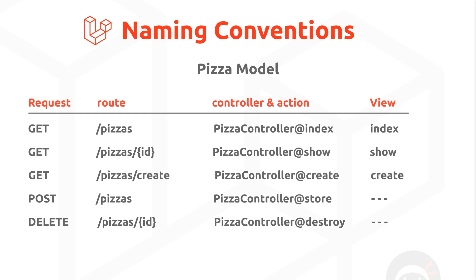Back to this convention chart, I've added a new line at the bottom. The request type is a DELETE one, and the route we're going to handle is forward slash pizzas forward slash the id of the record we want to delete. This is the same route as showing a single record, but this time it's a DELETE request not a GET request, so we can handle them differently. Convention says we call this action on the pizza controller 'destroy', and we don't need a view because once we've deleted a record we can just redirect the user to another page.